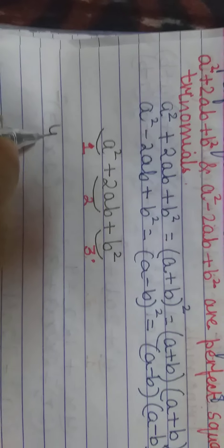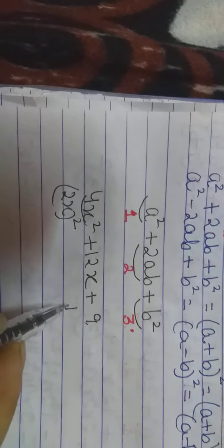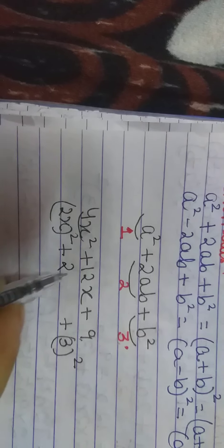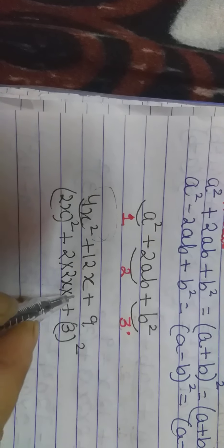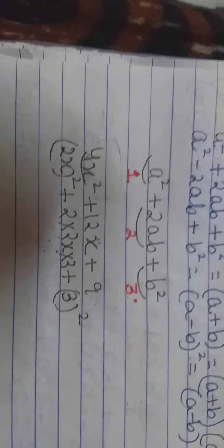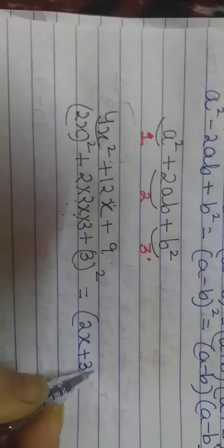Now let's take one example: 4x² + 12x + 9. What is 4x²? It is a perfect square of 2x. What is 9? It is a perfect square of 3. And in the middle it will be twice the square root of the first term into the square root of the third term: 2 × 3 = 6, so 6 × 2x = 12x. The middle term matches, so it is a perfect square trinomial. Therefore it will be (2x + 3)².